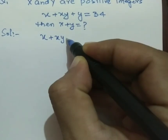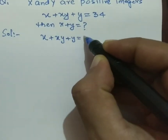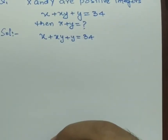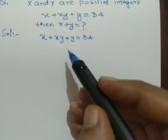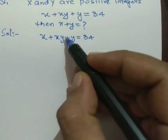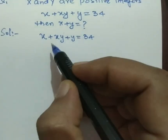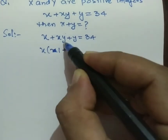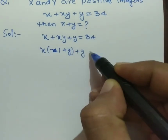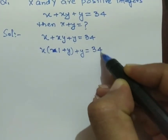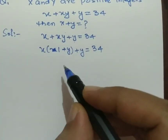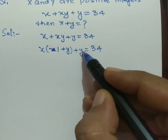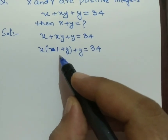x plus xy plus y equals 34. Now we can solve this in many ways, but we will use a very easy way. First, split this equation — take x as common: x times (1 plus y), plus y, equals 34. Now we add 1 to both sides, so that we get y plus 1 appearing on both sides as a common factor.